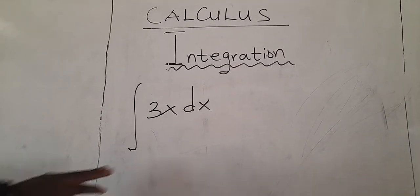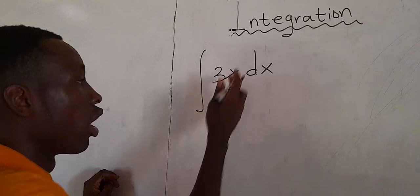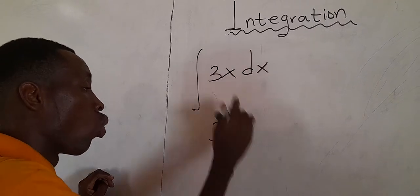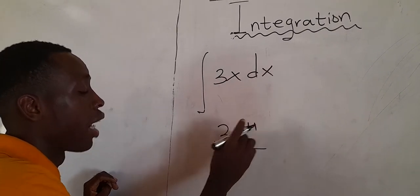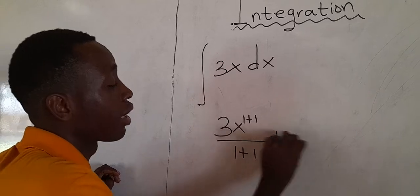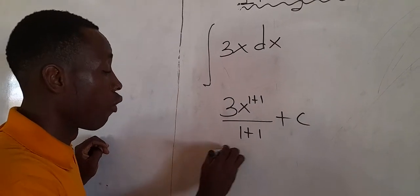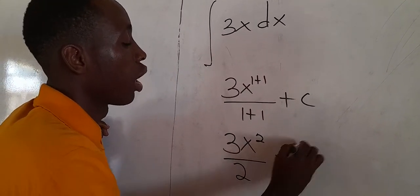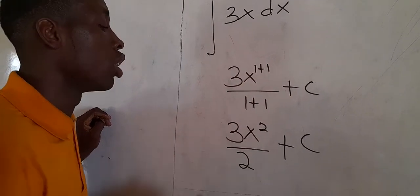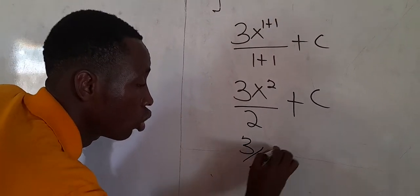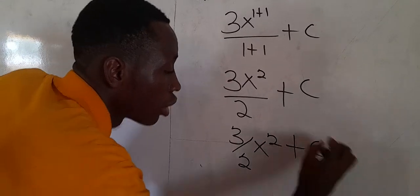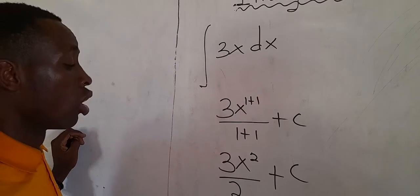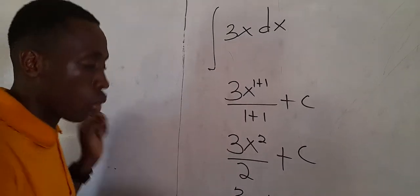If we are asked to integrate 3s ds, the exponent here is 1. So 1+1 = 2; we divide by the result: 3s²/2, plus the constant of integration C. So we have 3/2 s² + C. This becomes the equation of the curve for this gradient. When we differentiate this again, we get 3s back — it is the reverse.